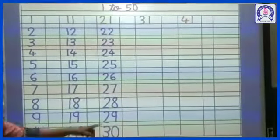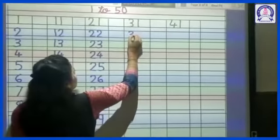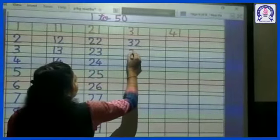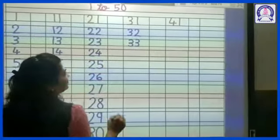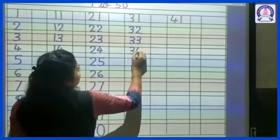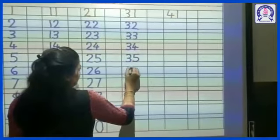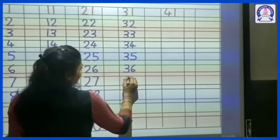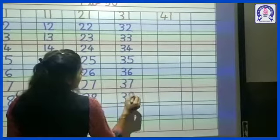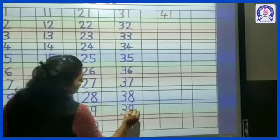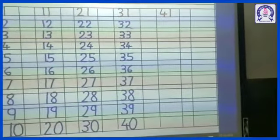30. What comes after 30? 31. 31 is already written. 32, 33, 35, 38, 39, 34, 40. What comes after 40?